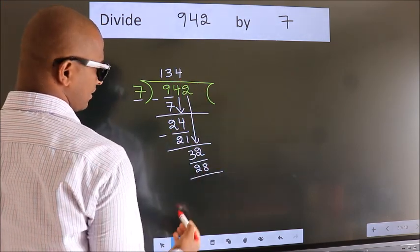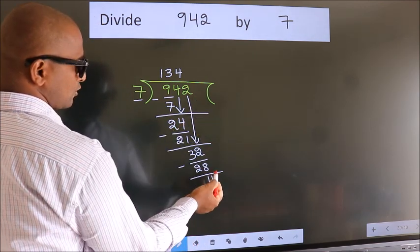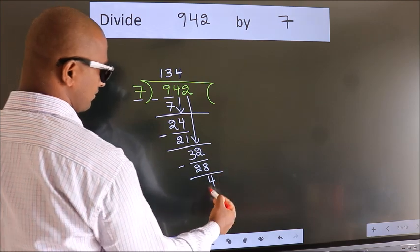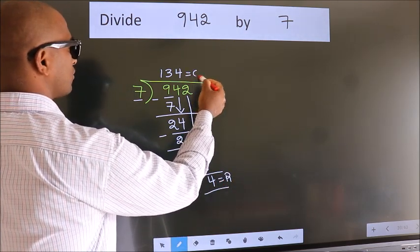Now, we subtract. We get 4. No more numbers to bring it down. So, we stop here. This is our remainder. This is our quotient.